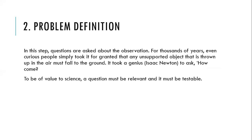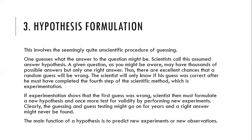Moving from problem definition to number three: hypothesis formulation. We now start creating a hypothesis, which is actually an educated guess — you may be correct, you may not be correct. One guess is what the answer to the question might be. Scientists call this assumed answer a hypothesis. Now that you have defined your problem — what law makes the mango fall from the tree to the ground, what law makes what I throw up come down — you don't yet know the answer.